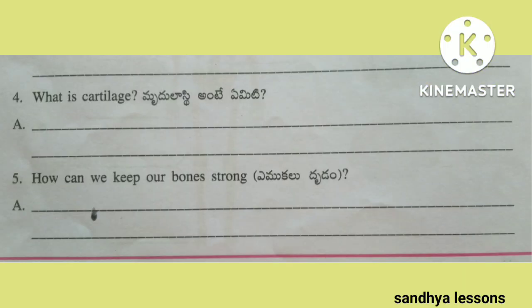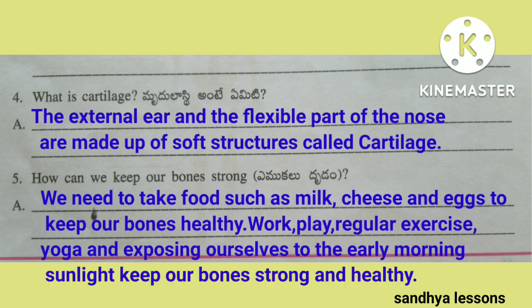Fourth question: What is cartilage? The external ear and the flexible part of the nose are made up of soft structures called cartilage.